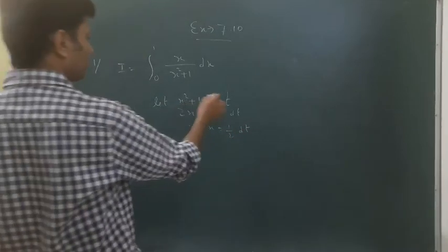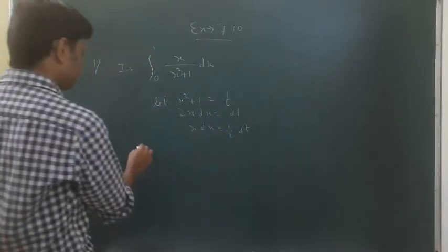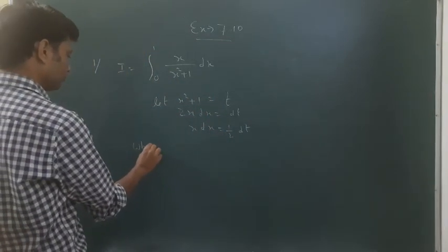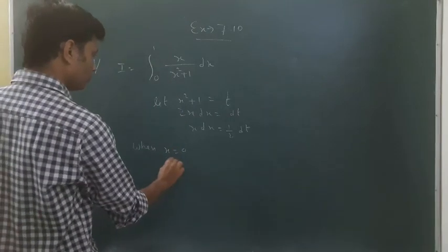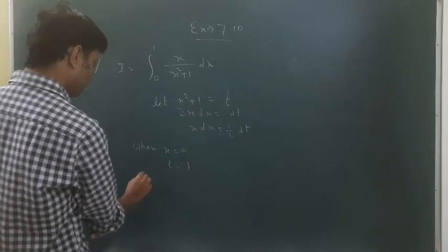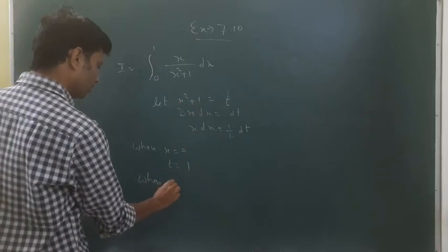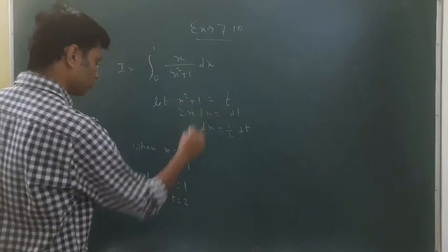Now because we're changing to t form, the limits must also change. When x equals 0, t equals 1 (putting 0 gives 1). And when x equals 1, t becomes 1² + 1, which is 2.